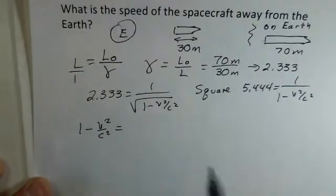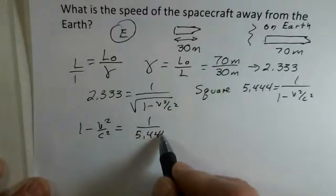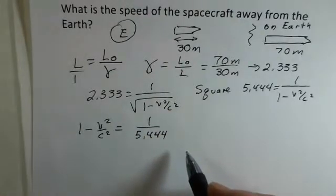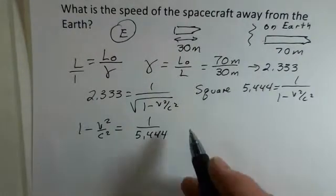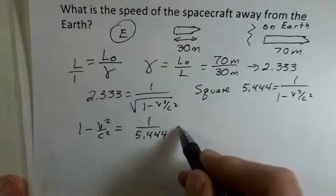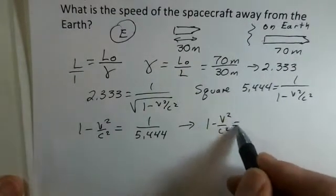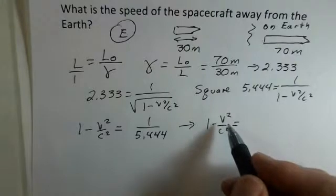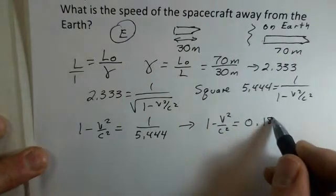Cross multiplying here, I'll have 1 minus v² over c² is now 1 over 5.444. I'm going to process 1 over 5.444. When I divide here, 1 divided by 5.444, I get 0.18367.